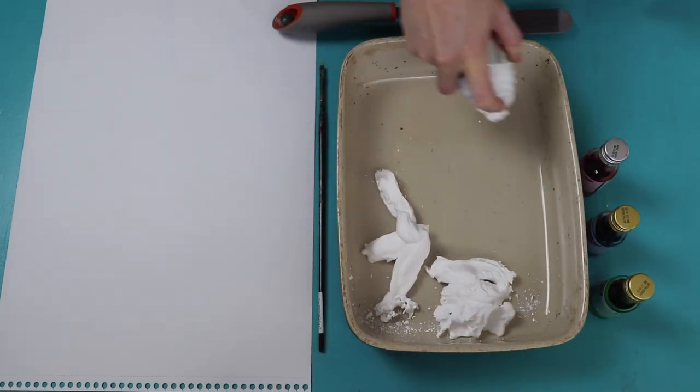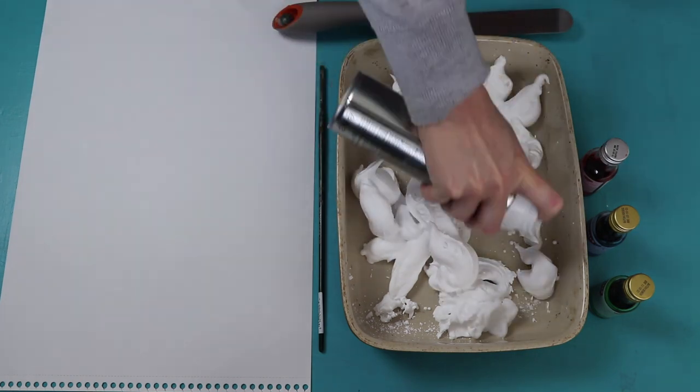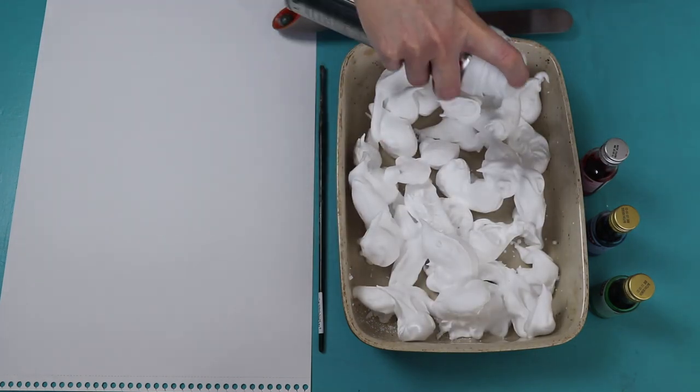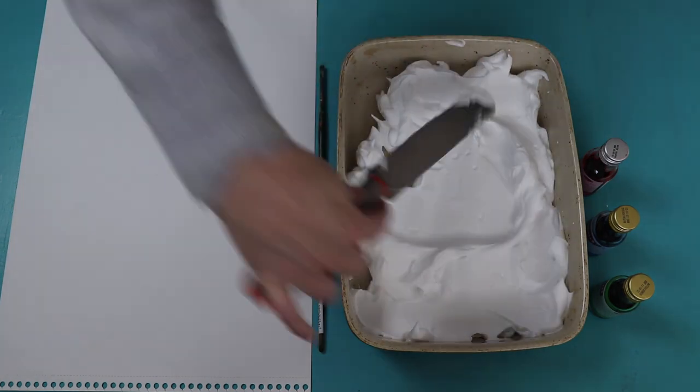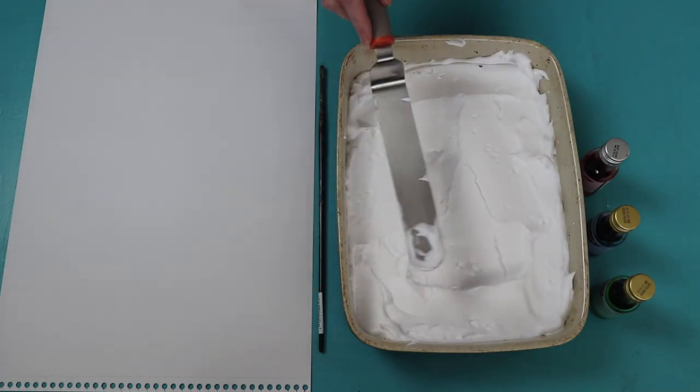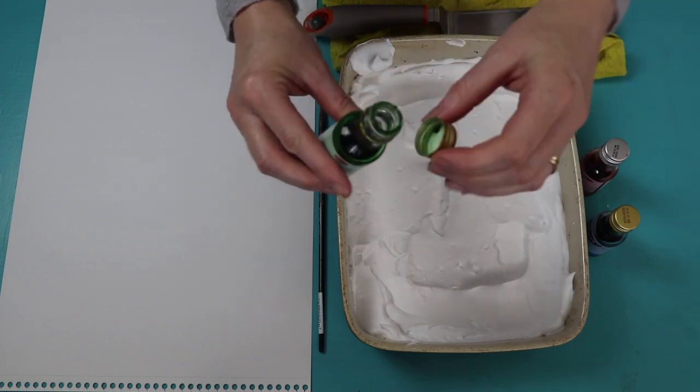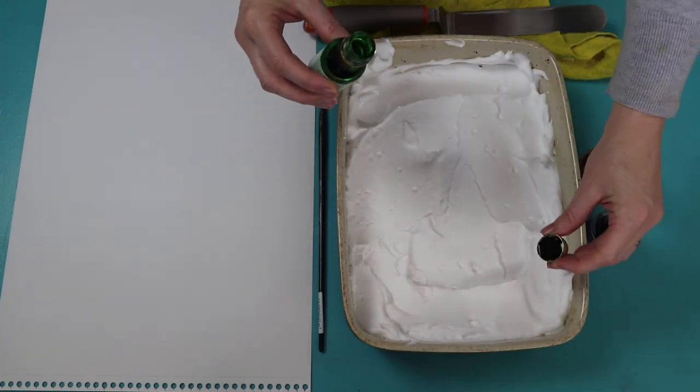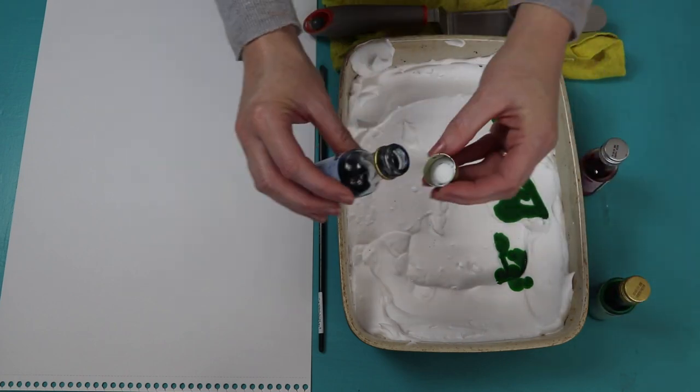Spray some shaving foam into the tray making a nice thick layer. Pour a cap full of your first color into the foam, and then pour the next two colors.